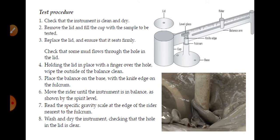Place the balance on the base with the knife edge on the fulcrum, and move the rider until the instrument is in balance as shown by the spirit level. If the spirit level goes in the right direction or left direction, it doesn't matter. Whenever it is at the center and will not move, that is the correct indication of the value. Read the specific gravity scale at the edge of the rider nearest to the fulcrum.